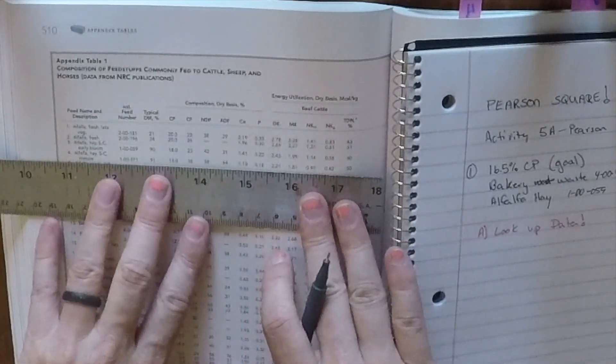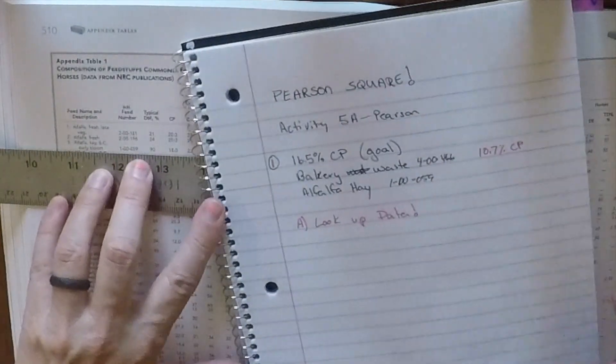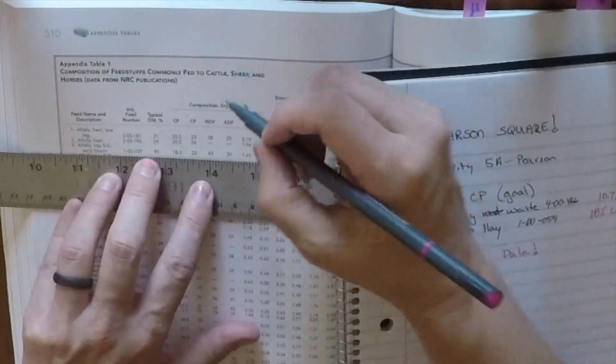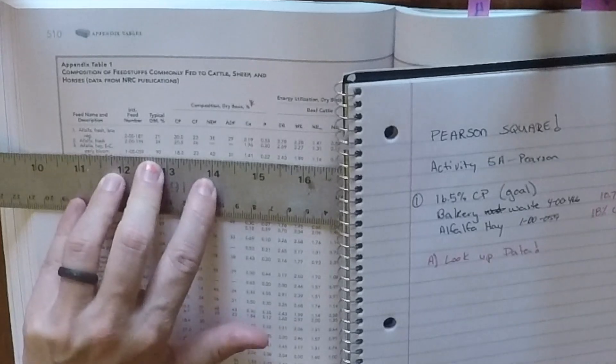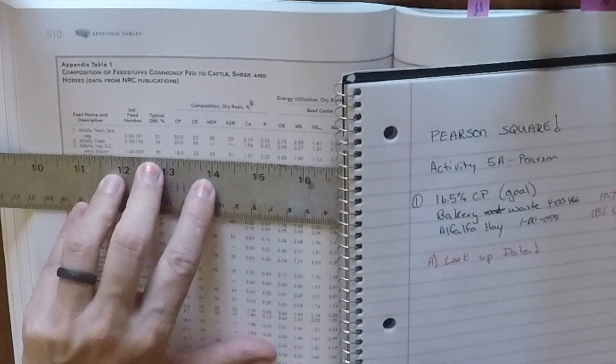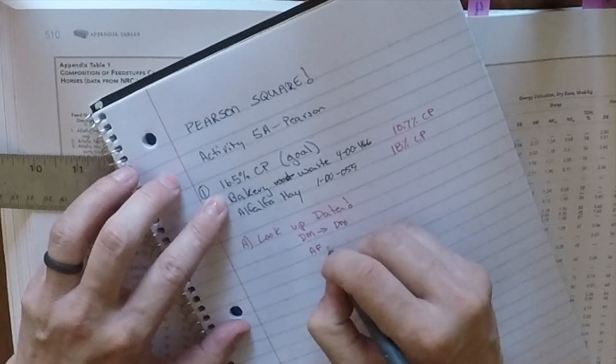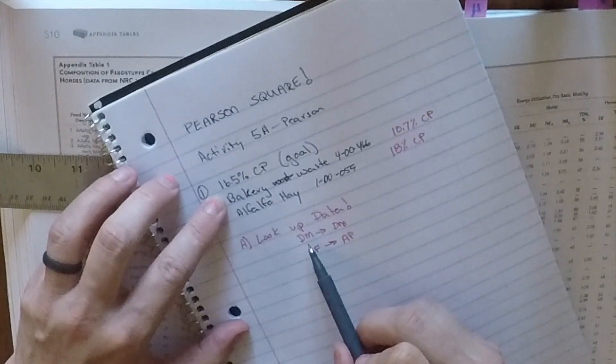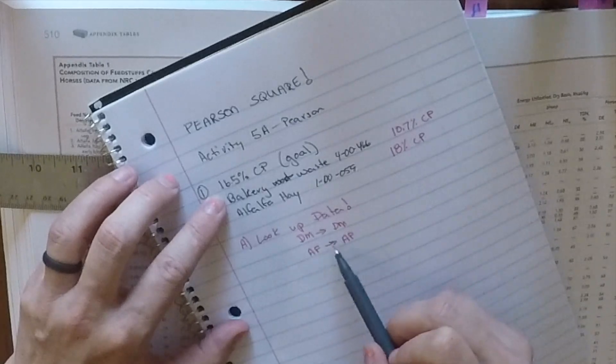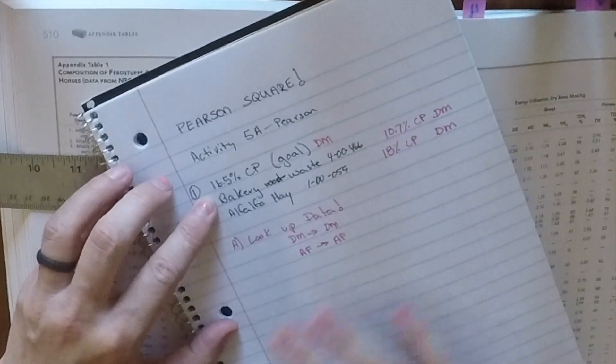Alfalfa hay. Now we have several choices, but if we check our IFN number, we want the early bloom, which has the IFN number of 1-0-0-0-5-9. And its crude protein is 18%. Now, it's important to note, and just as a reminder, that you always need to check how in the textbook data is presented. This composition data is on a dry matter basis, and the problem is asking us to balance on a dry matter basis. So we always have to make sure that we are matching dry matter to dry matter, or as-fed to as-fed. Both of these are dry matter, and the problem is asking for dry matter. So that makes sure we're set up.